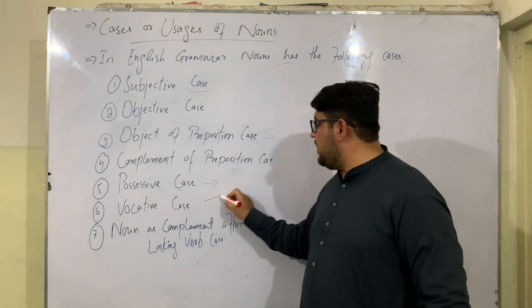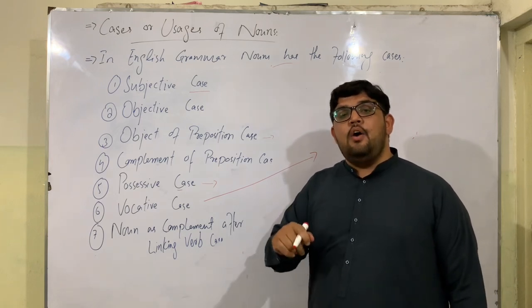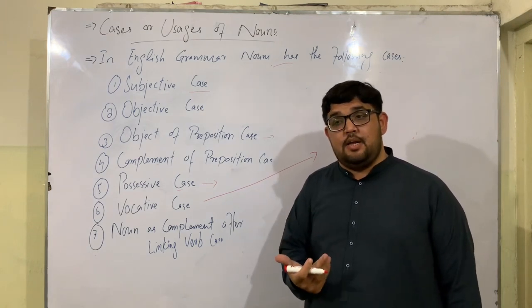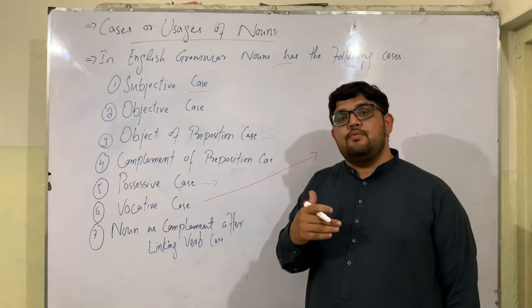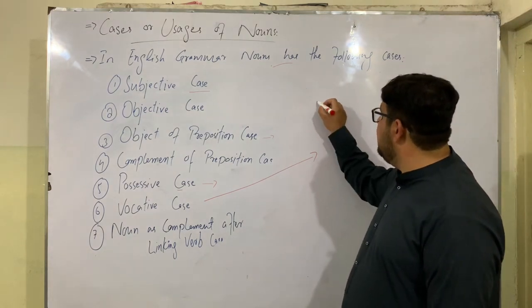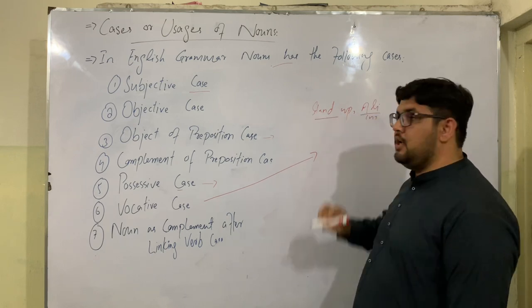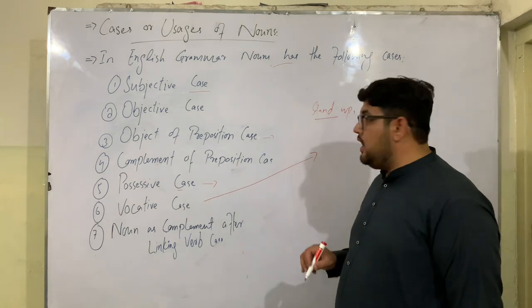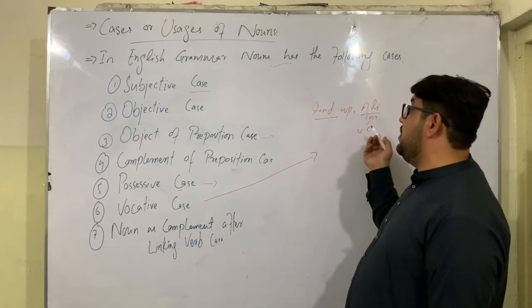The next case is the vocative case, also called the articulative case. In this case, a noun is addressed or ordered by the speaker. For example: 'Ahmad, stand up.' This is the vocative case of noun. The vocative noun can come either before or after an order or address.